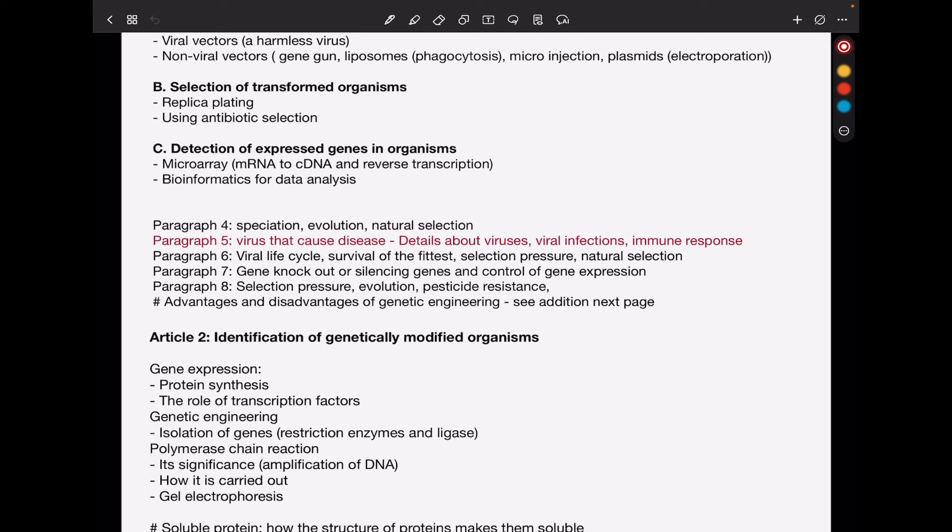In paragraph 7, we see knockout organisms, gene silencing, control of gene expression, so all these things could be asked. In paragraph 8, we see selection pressure, evolution, pesticide resistance, and so on. So I think questions about evolution and natural selection are coming up in every paragraph, so those are things you should look out for. And then advantages and disadvantages of genetic engineering, I'm going to talk about these on the next page.